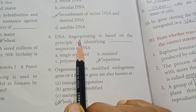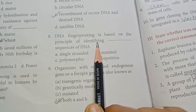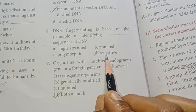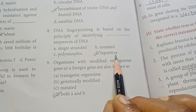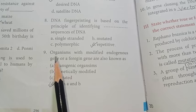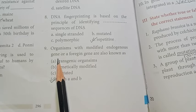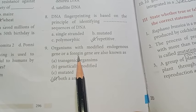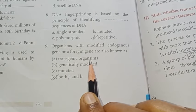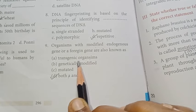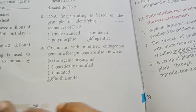Number eight: DNA fingerprinting is based on the principle of identifying repetitive sequences of DNA. Answer: repetitive. Number nine: Organisms with modified endogenous gene or a foreign gene are also known as both A and B — transgenic organisms are genetically modified. Option D is the right answer.